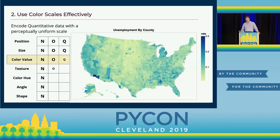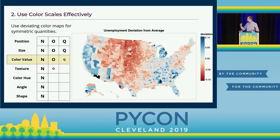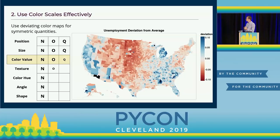Another type of color map to keep in mind is for data with a symmetric distribution around a midpoint. For example, this shows unemployment with the average subtracted, where average unemployment is in white, higher unemployment is in blue, and lower unemployment is in red. This kind of diverging color map lets you see two extreme quantities at once in a very intuitive way. Using color as effectively as possible can help you create really nice visualizations.